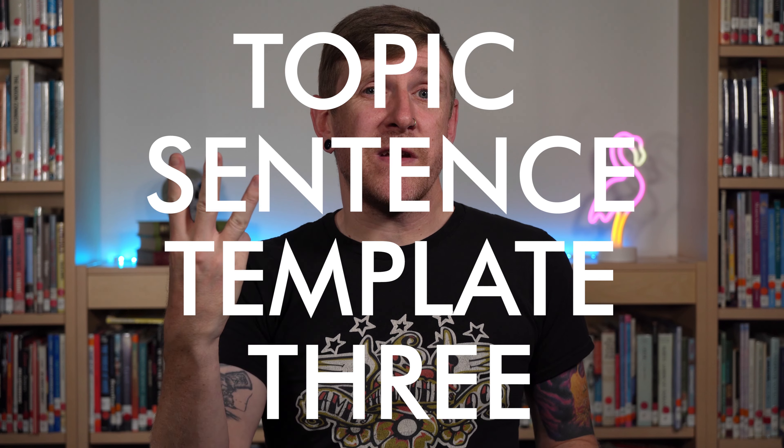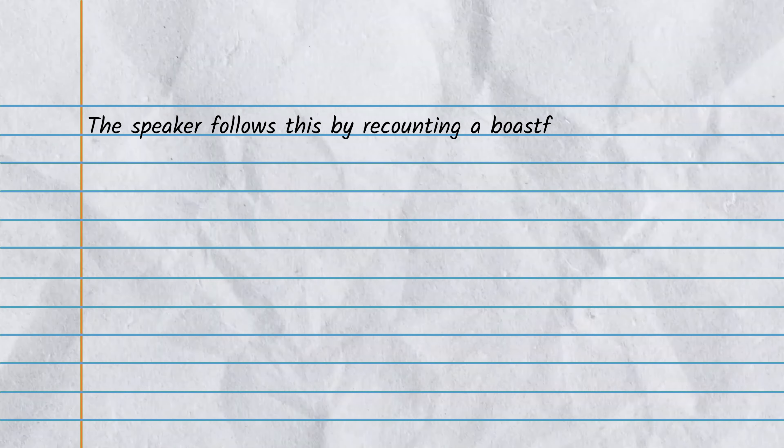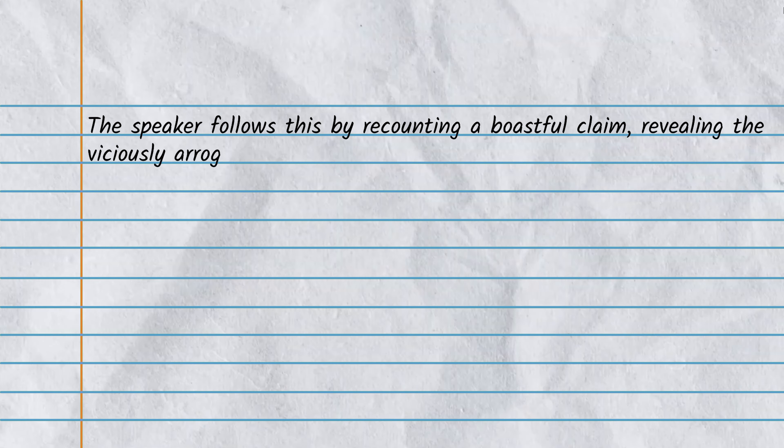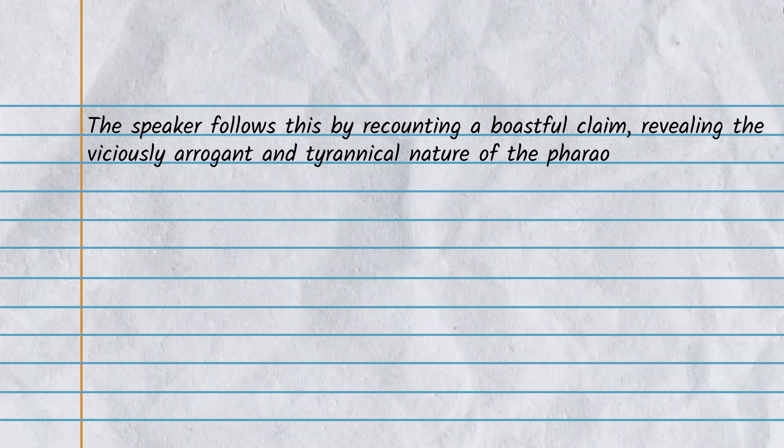As I continue to follow my templates, I'm going to write topic sentence three about the other major shift I found during my annotation process when Ozymandias' quote is referenced. Here's what topic sentence three would look like: 'The speaker follows this by recounting a boastful claim, revealing the viciously arrogant and tyrannical nature of the pharaoh.' This topic sentence discusses the single quote from the dead pharaoh and correlates it with how it characterizes him, so we are doing this right even without explicitly mentioning any literary elements. To finish this paragraph, I'd have to include the boastful claim and explain how it makes the past leader seem tyrannical and arrogant.